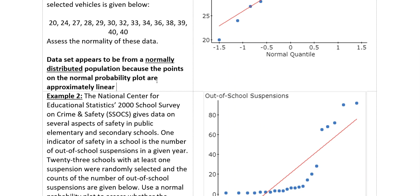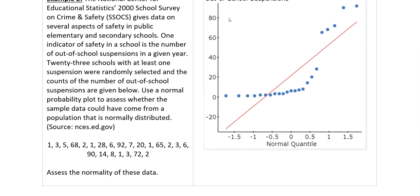All right, so now let's look at the number of out-of-school suspensions in this next one. And you can see that those points do not follow that red diagonal line down the center. So therefore, these data appear to not be from a normally distributed population because the points are not linear.